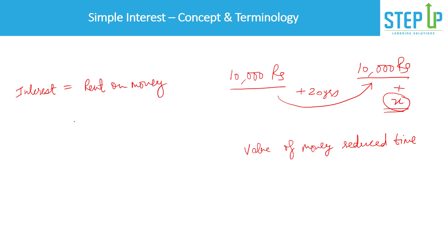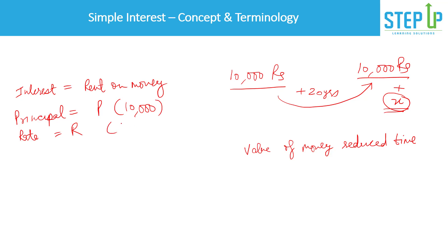The principal is the initial amount borrowed — let's say represented by P, which in this case was ten thousand rupees. Then you want to charge a certain rate of interest, represented by R. Let's say you charge a rate of ten percent per annum, and this is simple interest — meaning every year the rate would be the same.